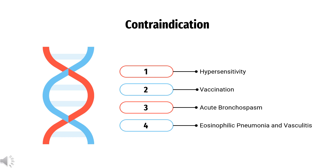Who cannot use Dupilumab? Contraindications include: hamster protein hypersensitivity; vaccination; acute bronchospasm, asthma, corticosteroid withdrawal, and status asthmaticus; eosinophilic pneumonia and vasculitis; helminth infection; pregnancy; and breastfeeding.